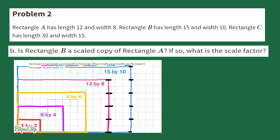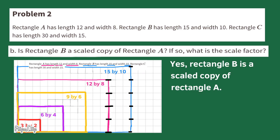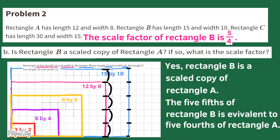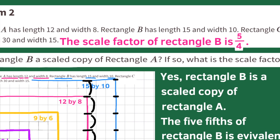Part B: Is Rectangle B a scaled copy of Rectangle A? Rectangle A is the pink rectangle and Rectangle B is the blue rectangle. Yes, Rectangle B is a scaled copy of Rectangle A. The five-fifths of Rectangle B is equivalent to five-fourths of Rectangle A. The scale factor of Rectangle B is five-fourths.